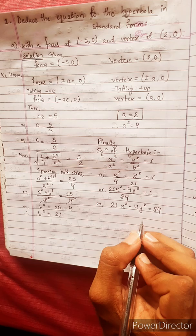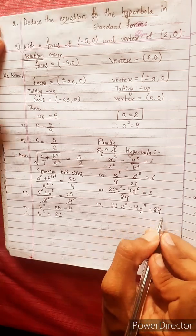Let's check the answer. 21x square minus 4y square equals to 84. And that's the right answer.